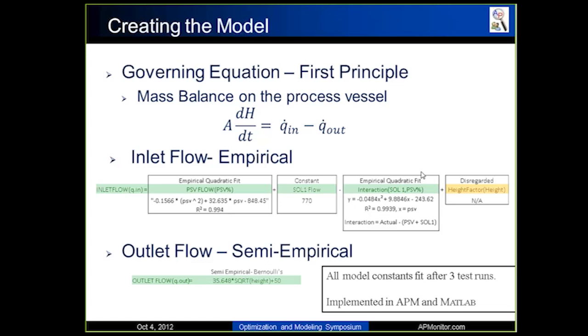And then outlet flow was modeled with a semi-empirical model. Basically, it uses the principle of Bernoulli's equation, which you can determine what the flow rate is going to be based upon the height of the tank. There's a valve at the very bottom of the tank, and so the higher the water is, the more the flow rate that's going to come out. And what I did is we just fit the Bernoulli's principle to the system.